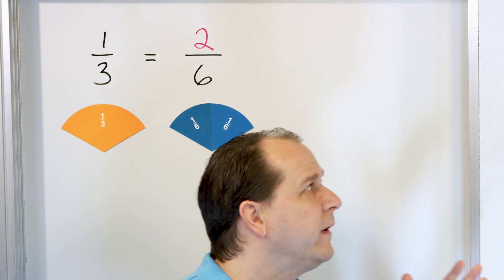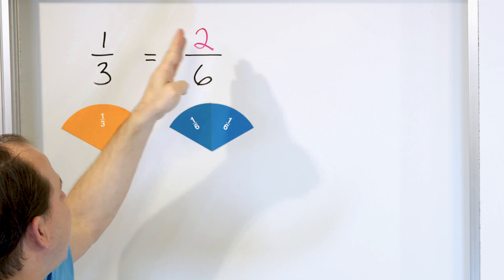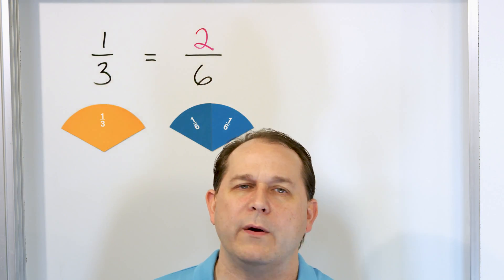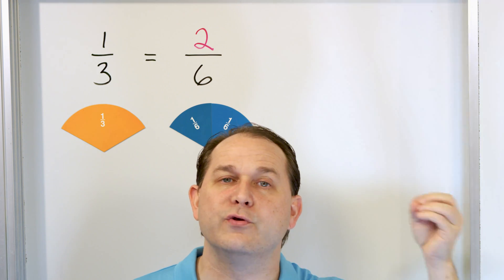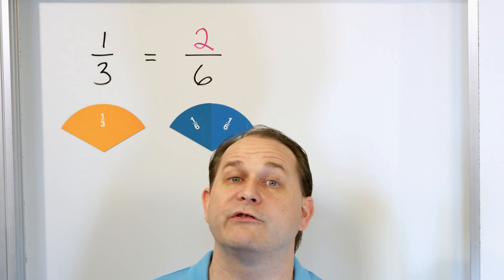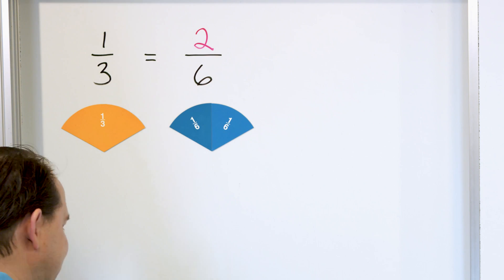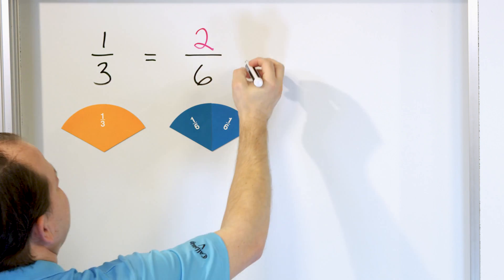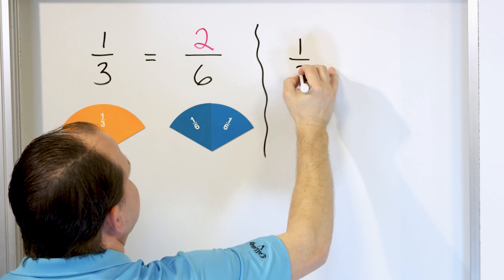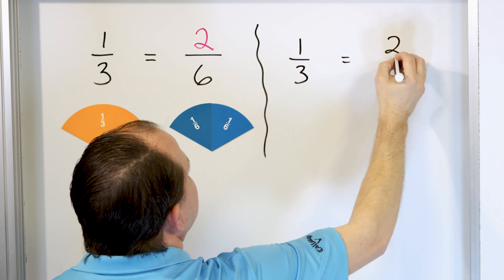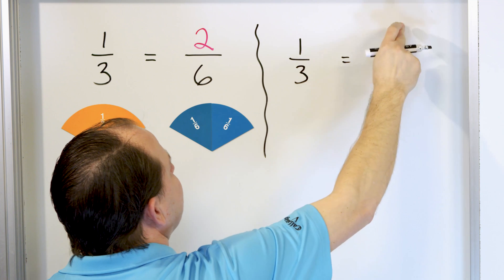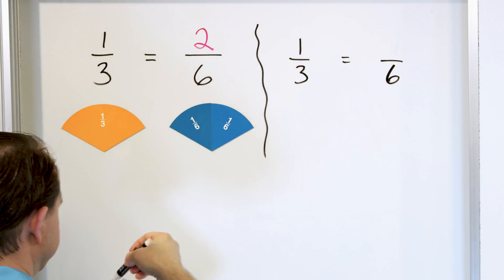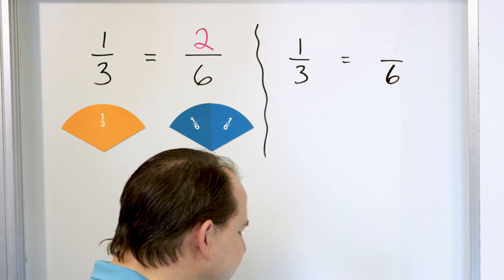None of us are going to be able to look at this and understand that they're the same in our minds — not even me. But what we do with the magnets here is we prove to ourselves that this is the case. And then also here, I want to show you how to calculate it. So let's say we didn't have this magnet at all and we wanted to calculate the answer. One-third is equal to something over 6. We don't know what's on the top. We know that there's a 6 on the bottom. So here's how you solve this problem.